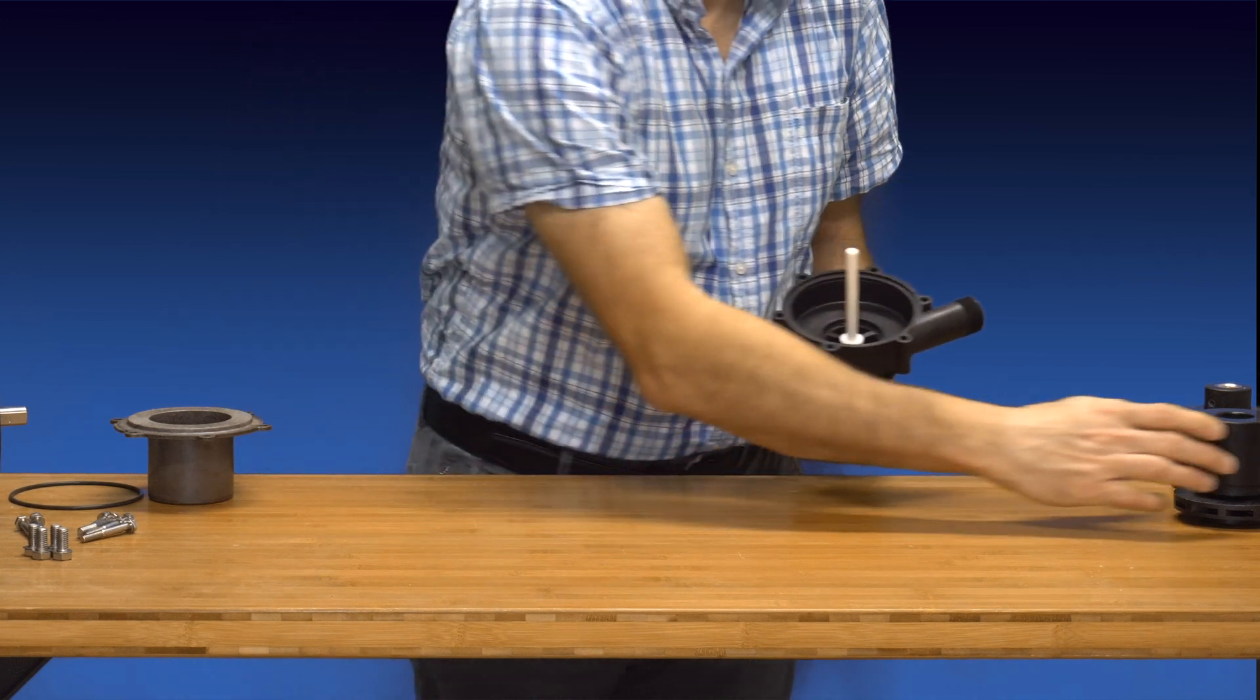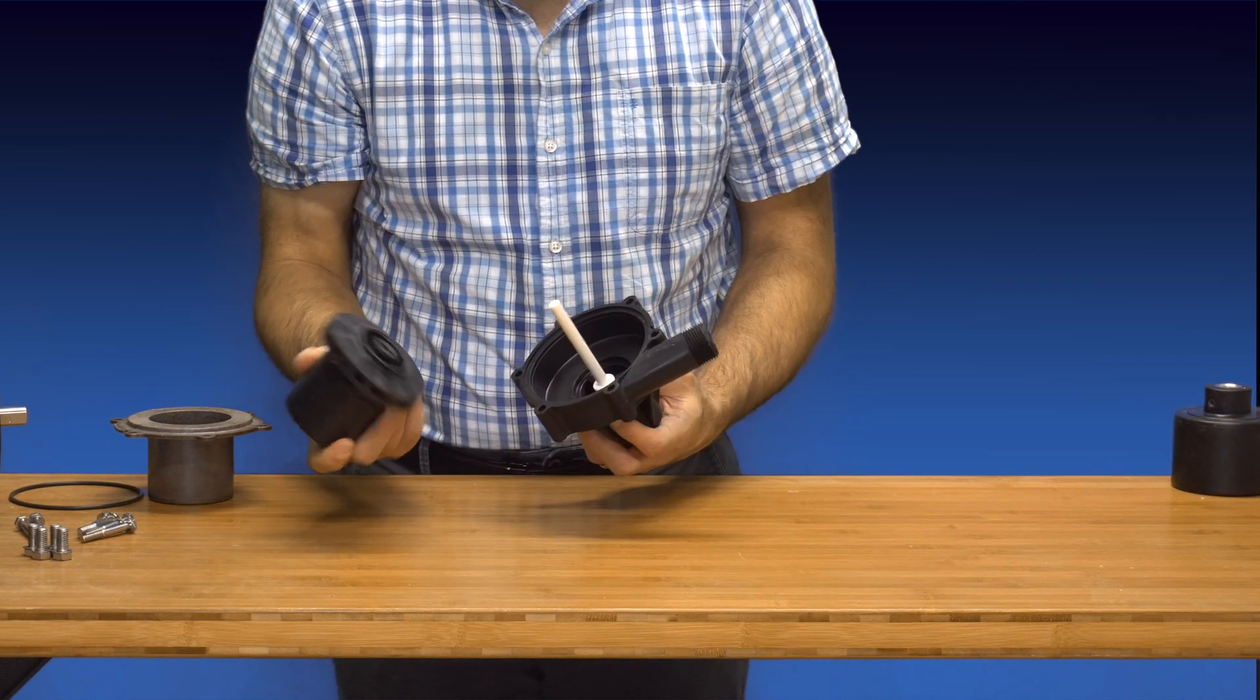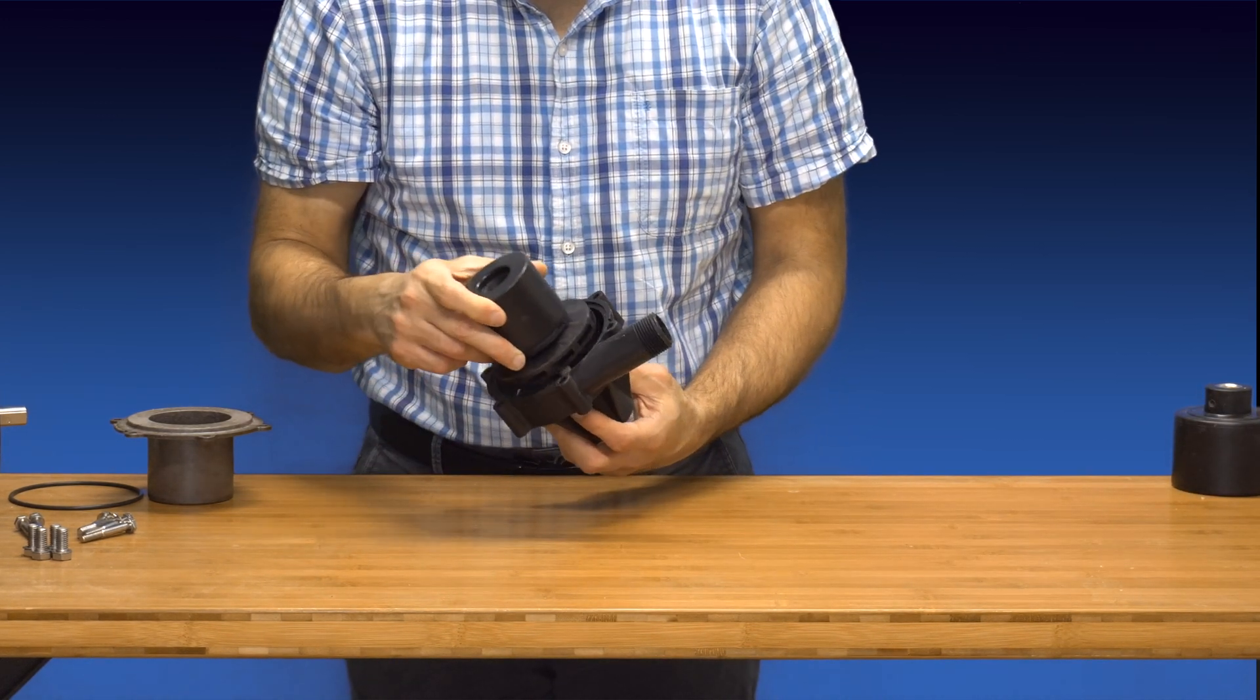Next, take the impeller and slip it over the pump shaft until its front surface makes contact with the thrust washer.